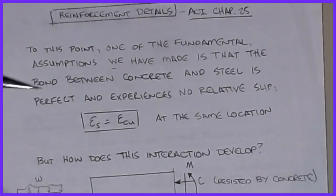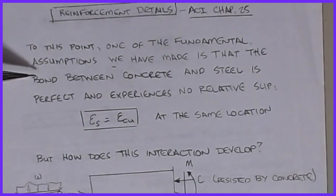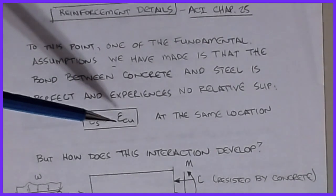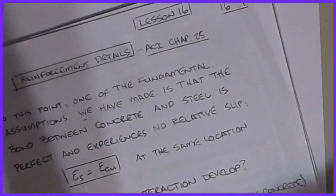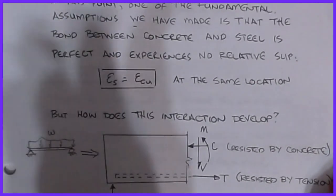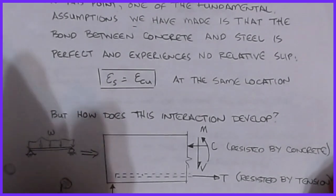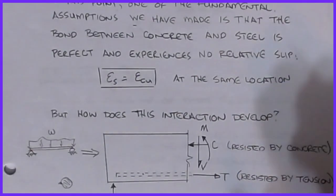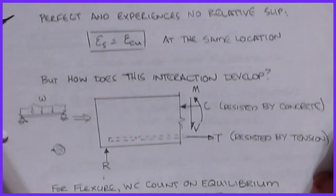Up to this point we have made some very fundamental assumptions. Back on the first or second video we started talking about the interaction between steel and concrete. We made the assumption that the strain in the steel was the same as the strain in the concrete at a given location along a bar. We assumed there was no slip — that bond was perfect — so at a point on a rebar the strain in the steel and the strain in the concrete immediately adjacent to it were the same value; one side wasn't allowed to slip relative to the other.